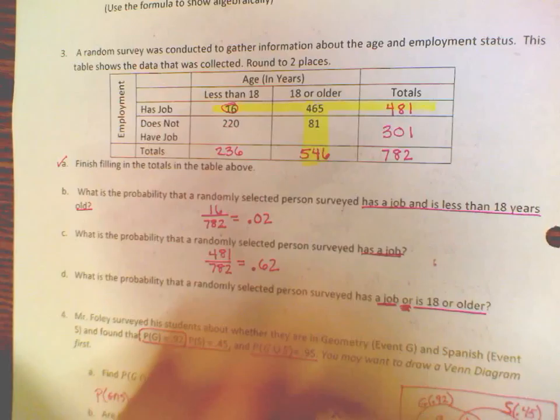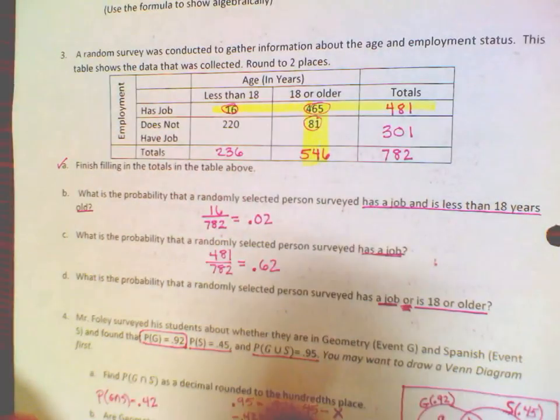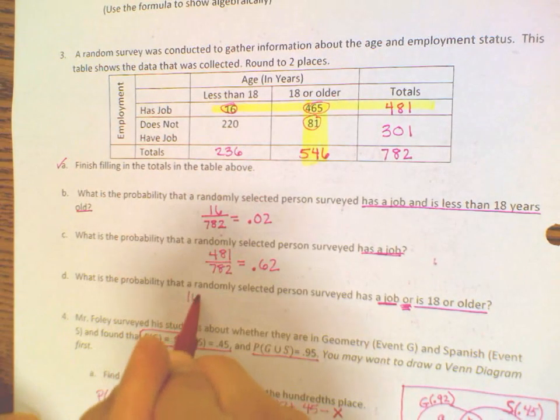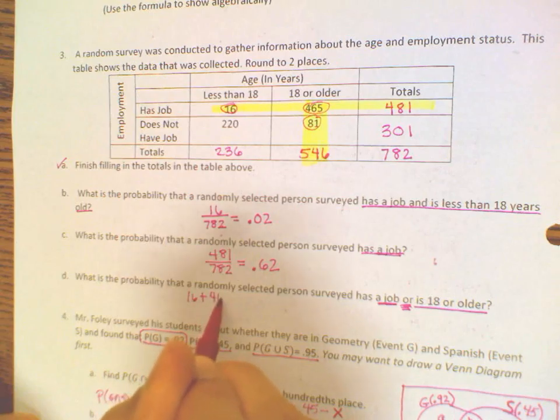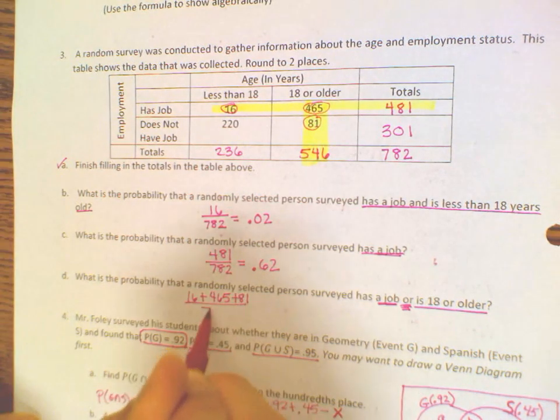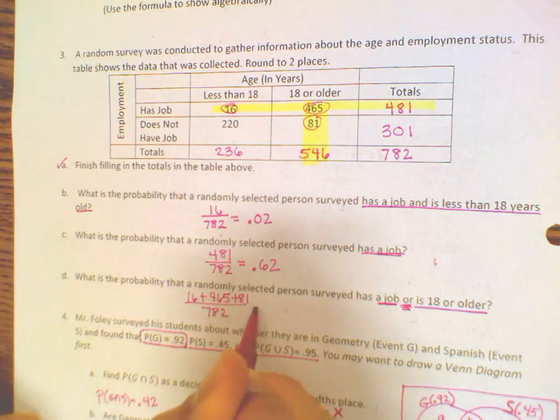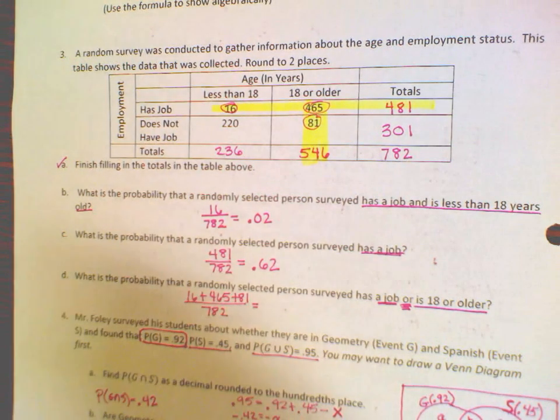Either you can add these three numbers, which would be 16 plus 465 plus 81, and divide by 782. Can I get that sum from you?